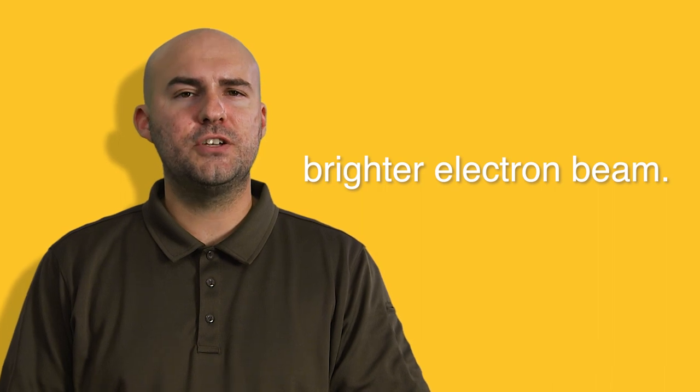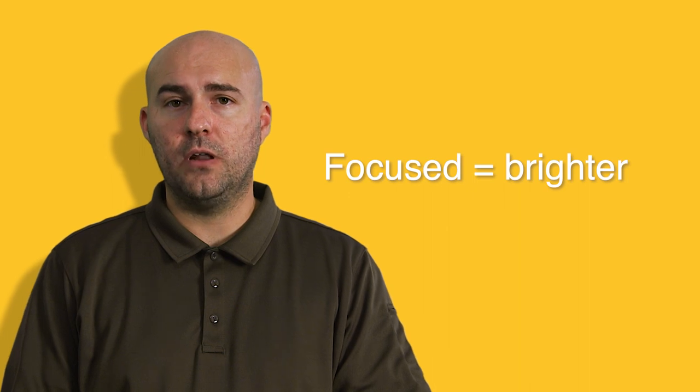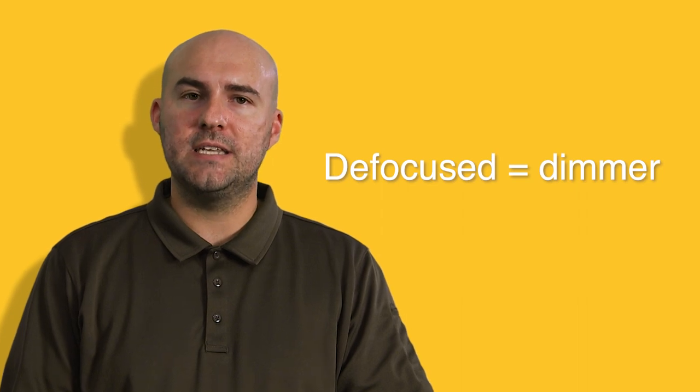You can think of it like an adjustable flashlight. If the flashlight is focused, then the light gets brighter and it shines on a smaller area. But as we defocus the flashlight, the light spreads out over a larger area and the brightness gets dimmer.